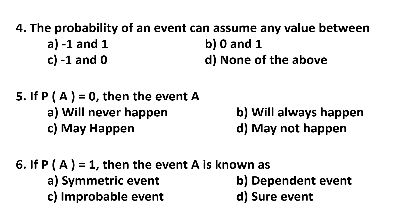Question 6. If probability of A is equal to 1, then the event A is known as: a symmetric event, dependent event, improbable event, or sure event.